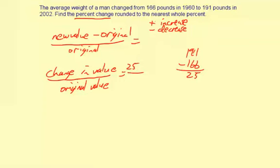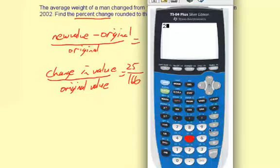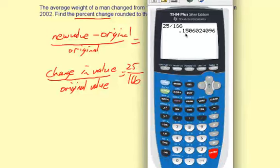Then divided by the original value, which is 166. So our percent change is going to be 25 to 166. And let's use a calculator to figure that out. So 25 divided by 166. So that's a .15 or 15% increase.